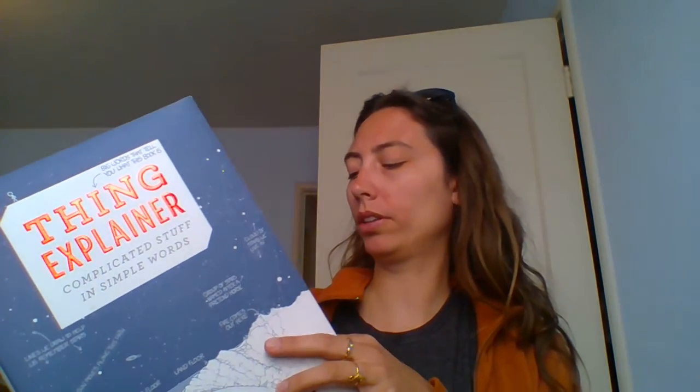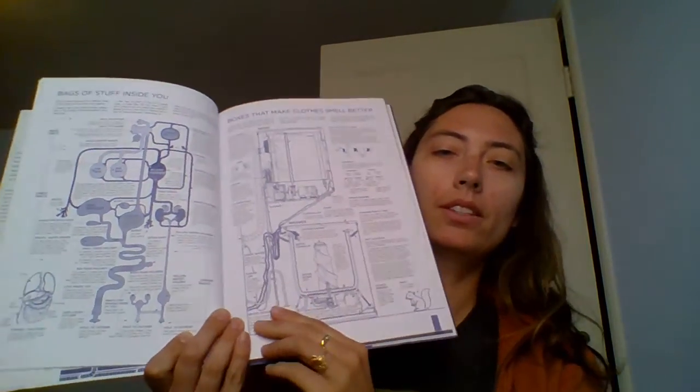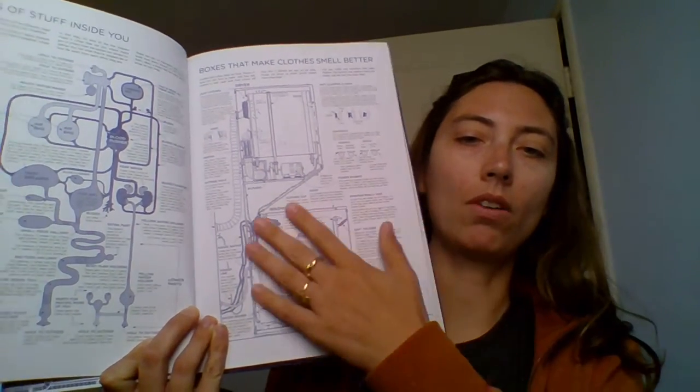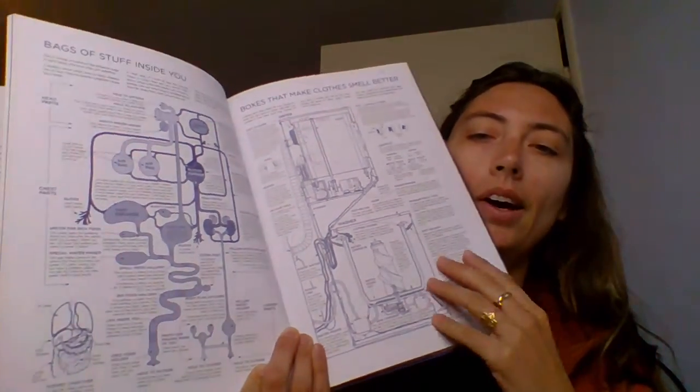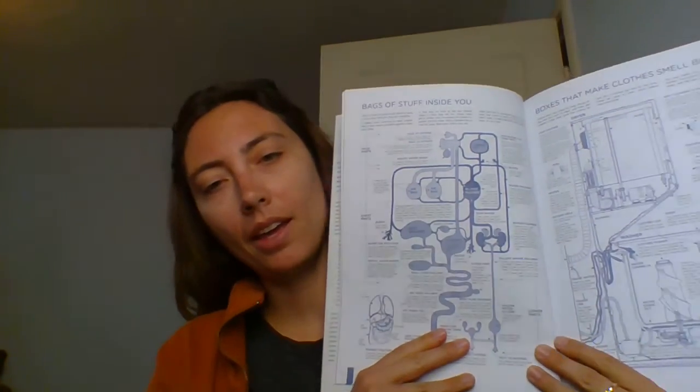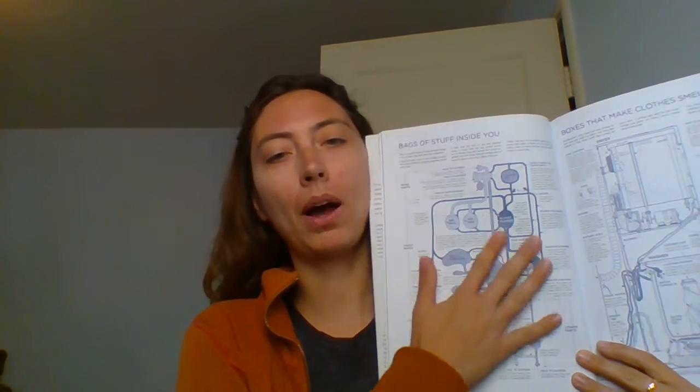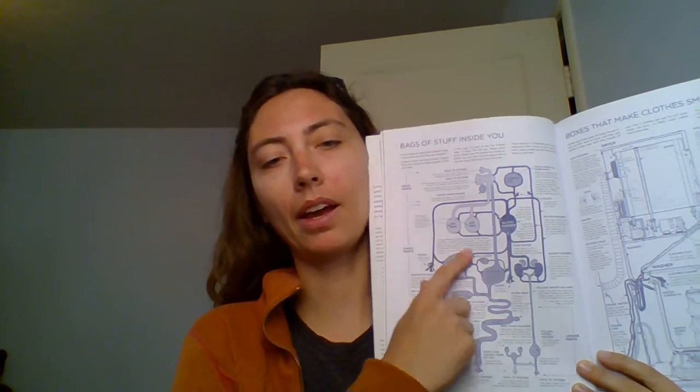It's got every page, or sometimes a two-page spread, devoted just to one thing. So, for example, right here you see a washer and dryer, and it's got all the parts labeled and stuff. This one over here is a sort of London underground map style of the human body, like, you know, mouth, stomach, everything like that.